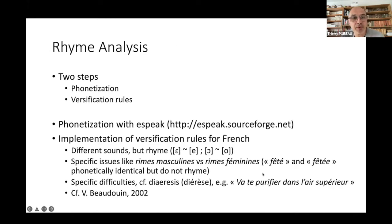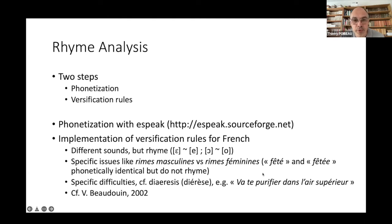Rhyme analysis is something we do in two steps. It's not so simple, but we have steps for phonetization — to transform the text into a sequence of sounds. Then we have specific rules, because French has very specific rules, like in any literary tradition, about what could be a good poem. This is done using a software called eSpeak, and then we had lots of different rules implemented. For example, the sounds O and AU are two different sounds in French, but in fact you can put them at the end of a verse as a rhyme.